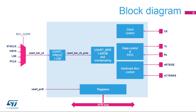This is the USART block diagram. The USART clock source can be selected from several sources: a peripheral clock, the SIS clock, the high-speed internal 16 MHz oscillator, or a low-speed external oscillator. The USART clock source is divided by a programmable factor in the USART PRESC register, in a range from 1 to 256.